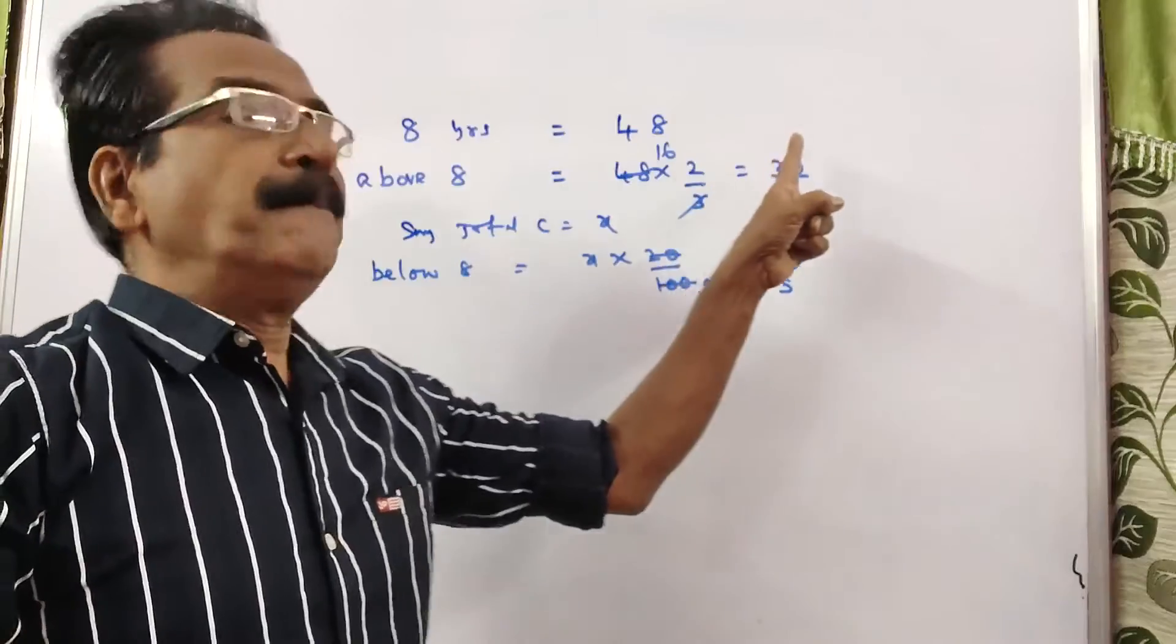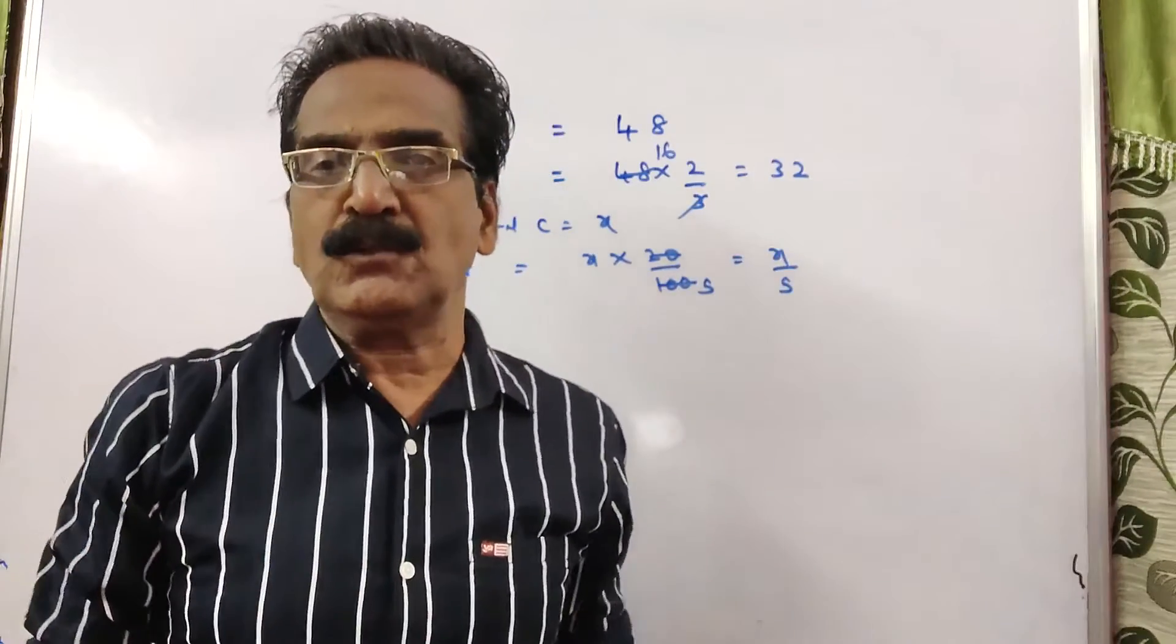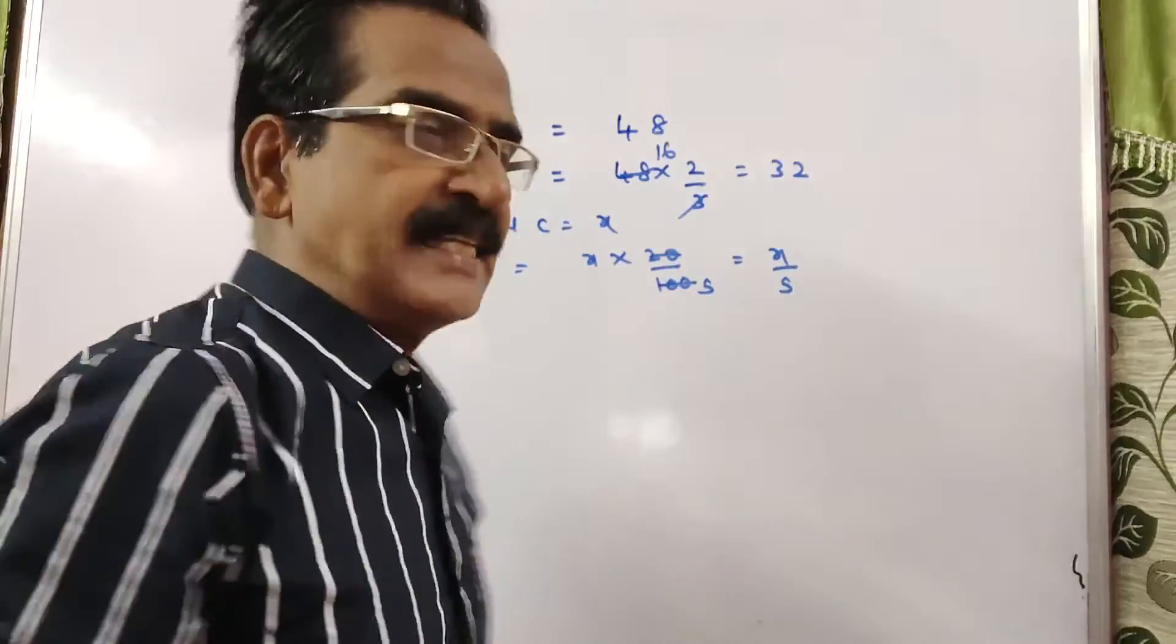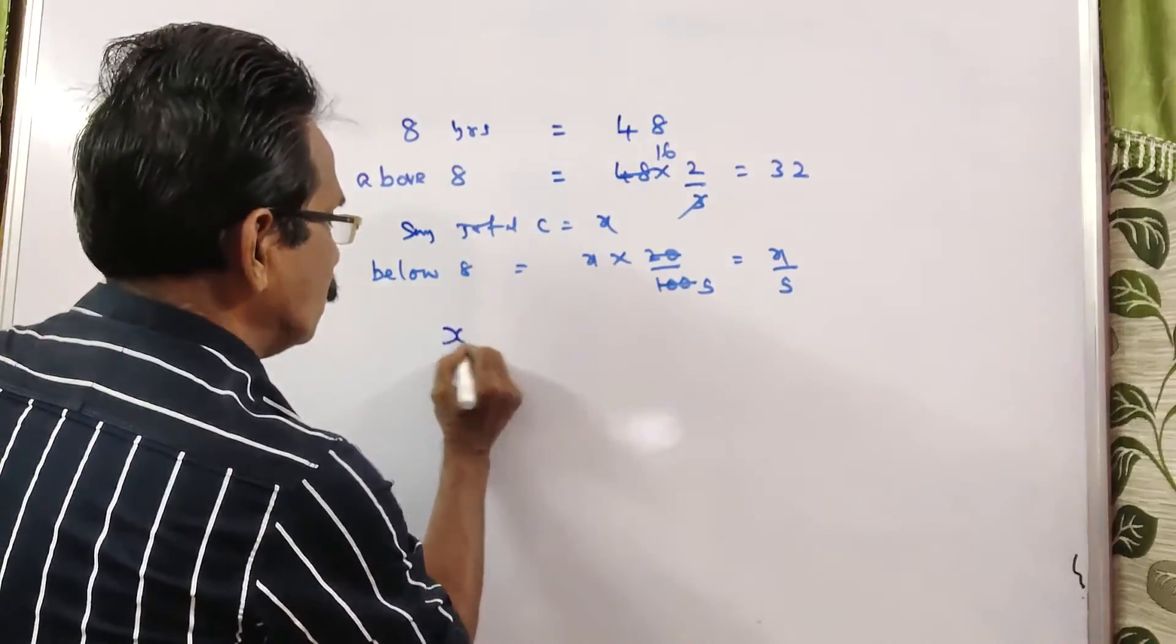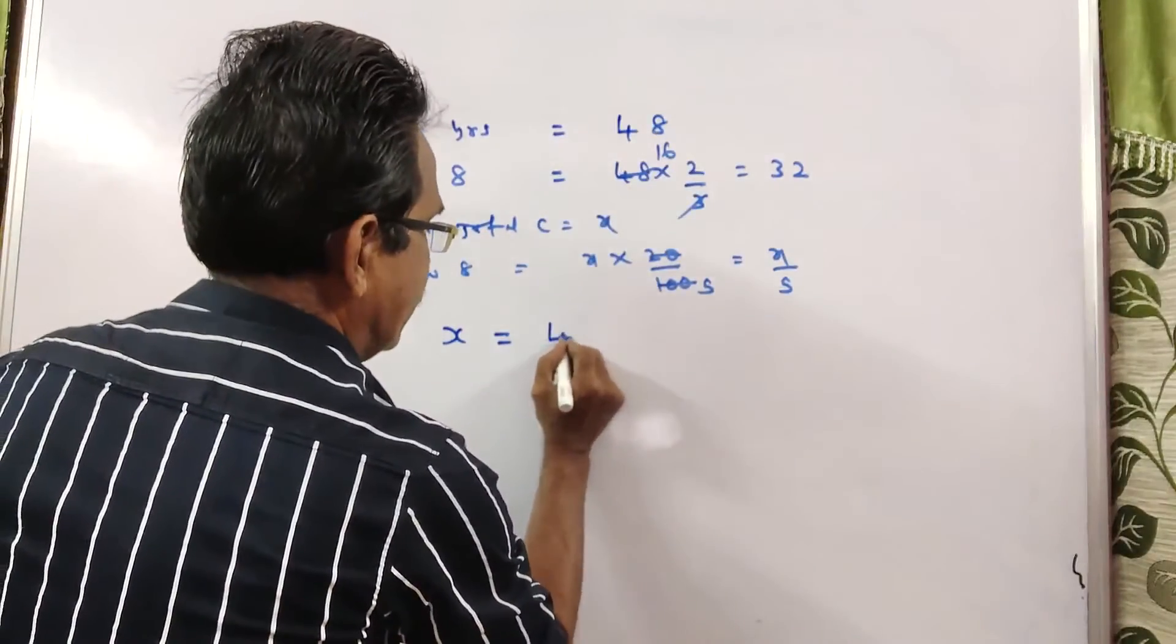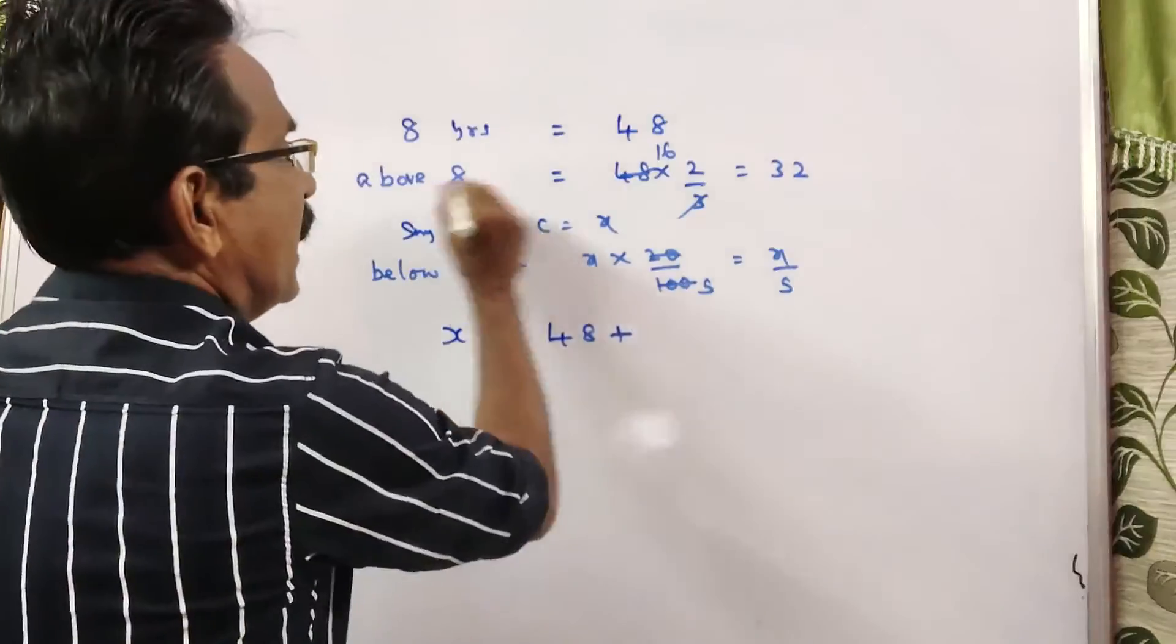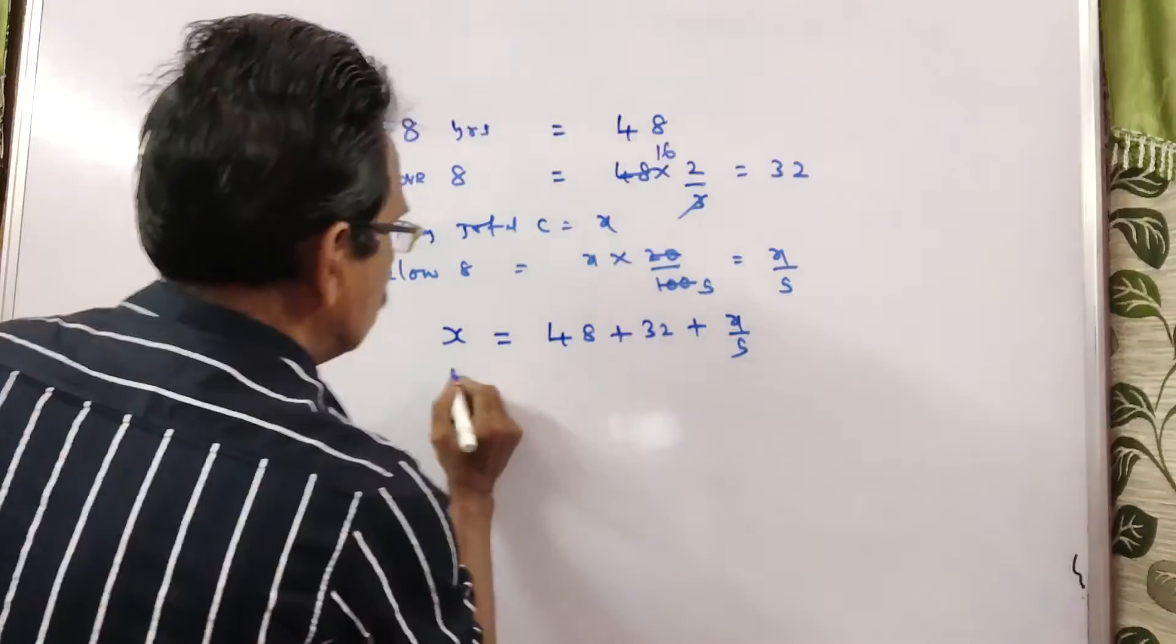Now, 48 plus 32 plus x/5 is equal to total number of children, that is x. So total number of children x is equal to children exactly 80 years, children above 80 years, and children below 80 years.